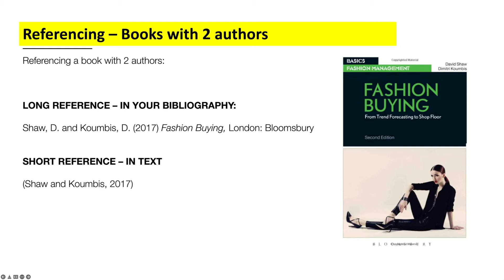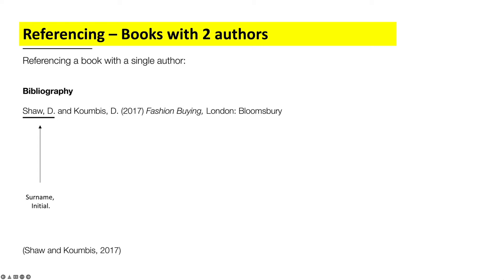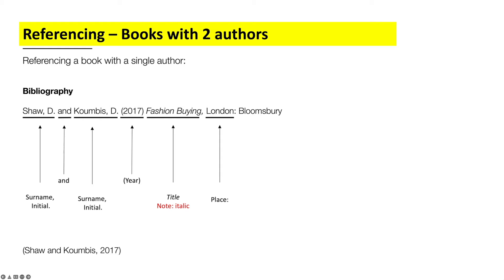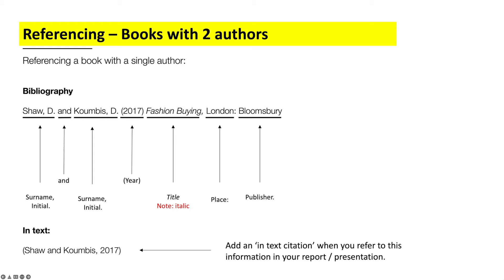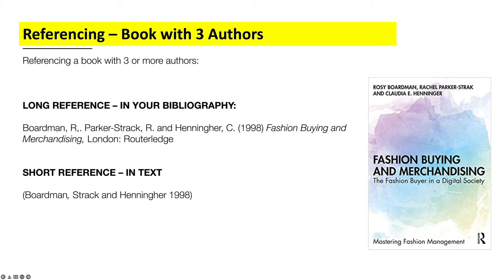For a book with two authors, the format is similar. Surname, comma, first initial, full stop — then the word 'and' followed by the second author's surname, comma, initial, and full stop. Then the year in brackets, the title in italic, the place of publication with a colon, and the publisher. For the in-text short reference, you put the first author's surname, then 'and', then the second author's surname, comma, year — all in brackets. Just make sure you add the word 'and' when there are two authors.